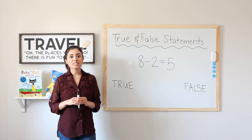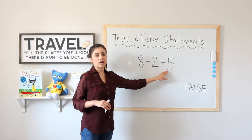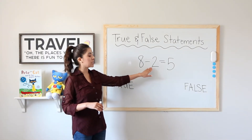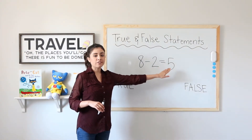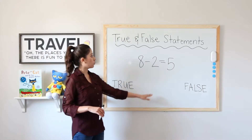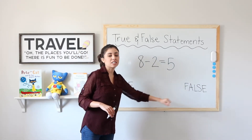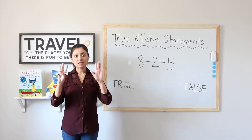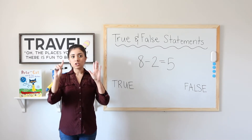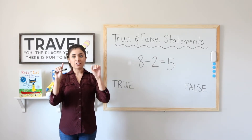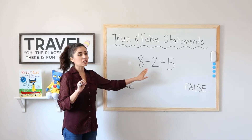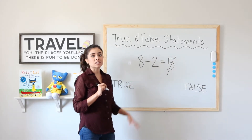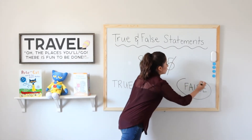Let's start with our first example: 8 minus 2 equals 5. Is this statement true or false? Let's subtract 8 minus 2. If we get 5, the statement is true; if we get something else, it's false. I have 8 fingers and I'm going to put down 2. 8 minus 2 — 1, 2. My answer is 6. 8 minus 2 equals 6, not 5. That means this statement is false.